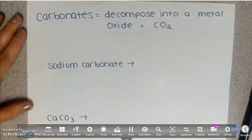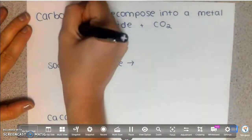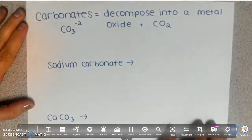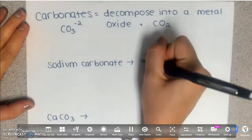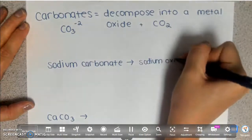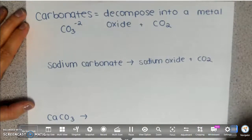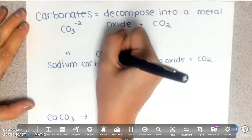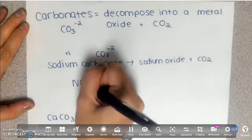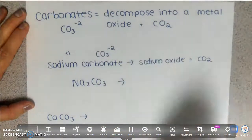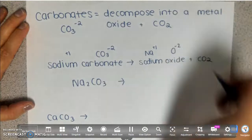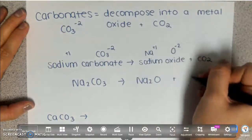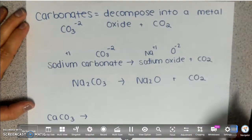The last polyatomic ion you need to know is carbonates. Carbonate is CO₃²⁻, charge of negative 2. Carbonates decompose into a metal oxide plus CO₂. Same approach: write sodium oxide — not 'metal oxide' — and then plus CO₂. Sodium is +1, carbonate is CO₃²⁻, so the reactant is Na₂CO₃. Sodium oxide: sodium is +1, oxygen is -2, so Na₂O, plus CO₂. That equation is balanced.